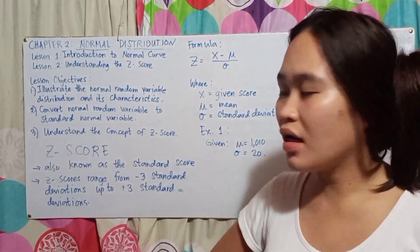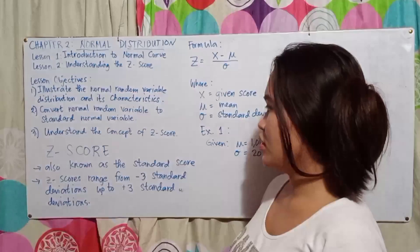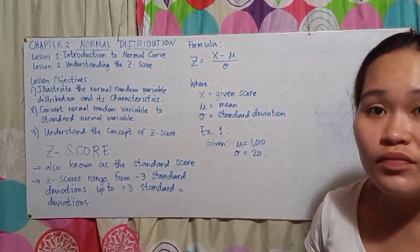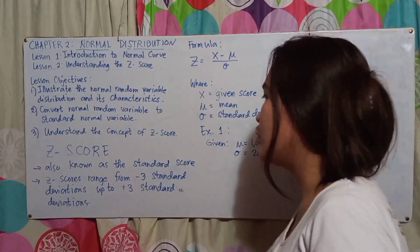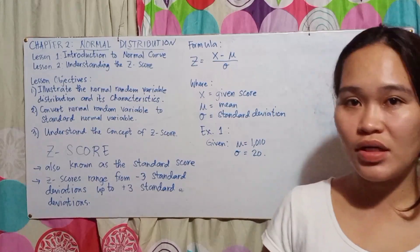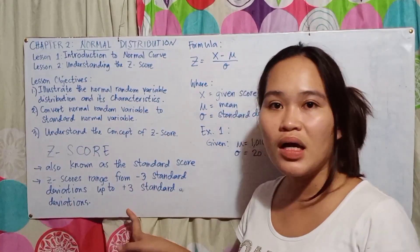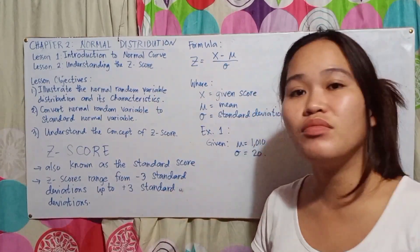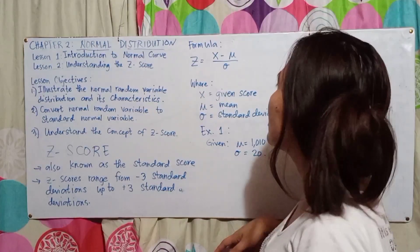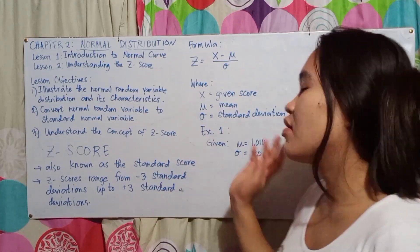Let's proceed to lesson two: understanding the Z-score. The Z-score is also known as the standard score. The area under the standard score is known as the areas of the standard normal probability distribution. Z-scores range from negative 3 standard deviations up to positive 3 standard deviations, as this range approximates nearly 100% of the distribution. The formula is Z equals X minus the mean, divided by the standard deviation, where X is the given score.